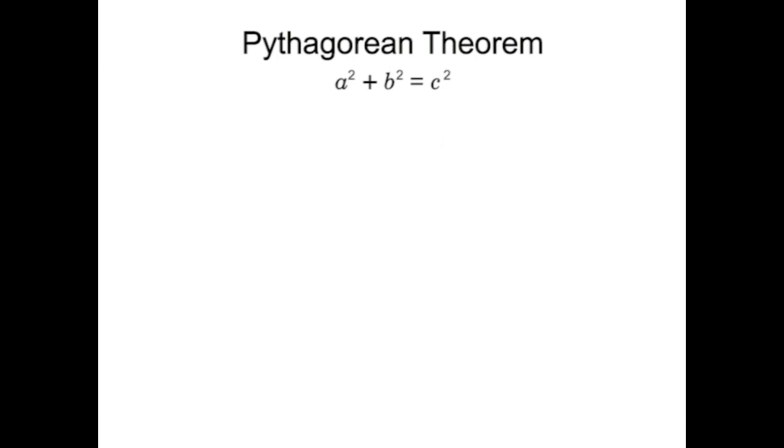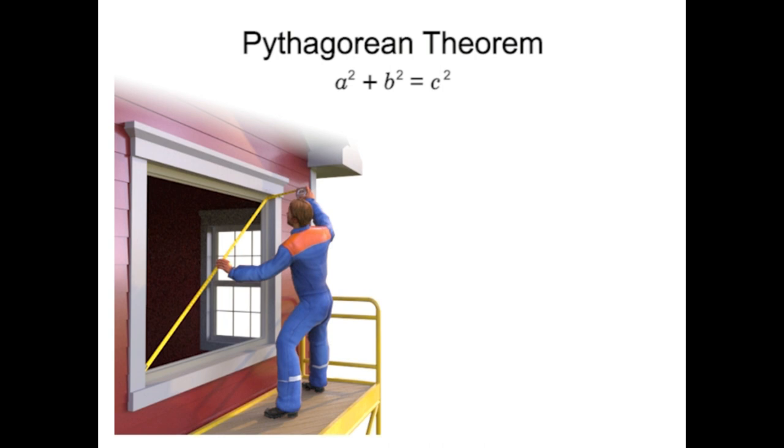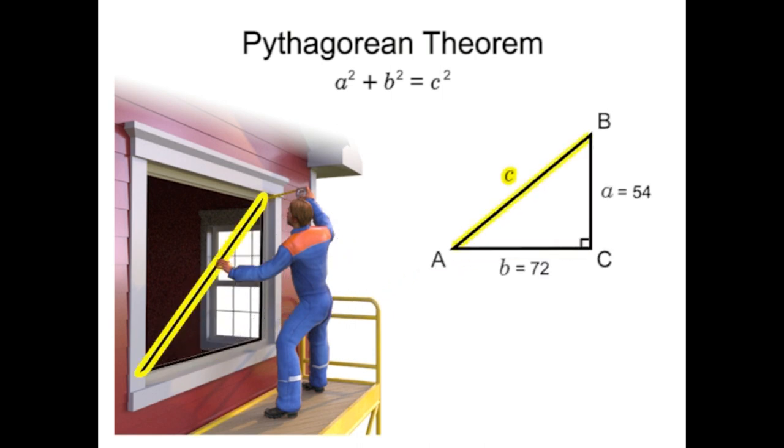Here's a good example of the benefit of the Pythagorean Theorem. A carpenter is installing new windows in a home. The windows measure 54 inches by 72 inches. The carpenter wants to ensure that the windows are square before securing them in place. To do so, he'll need to measure the diagonal of the window to confirm that it is the right distance and that the window is square. What should the diagonal measure? Let's find out.